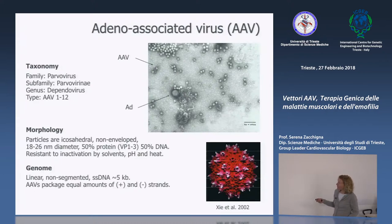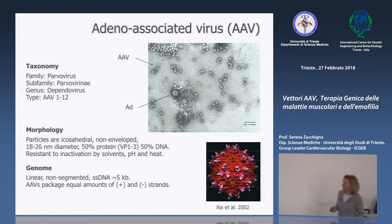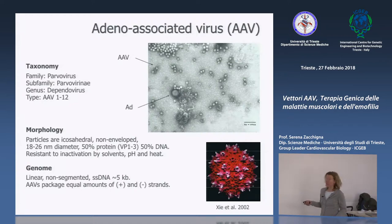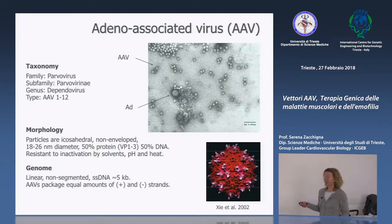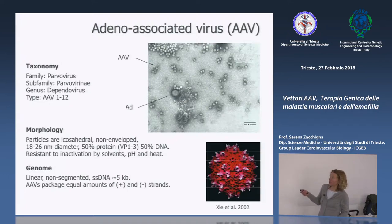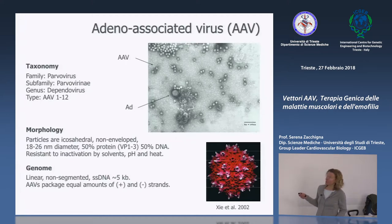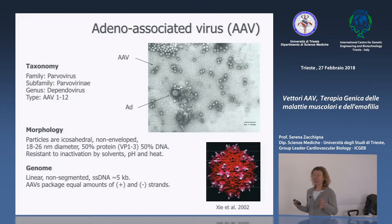Le particelle di AAV hanno un capside rivelato in cristallografia per la prima volta nel 2002: proteine capsidiche senza envelope che contengono il DNA virale, un DNA lineare a singolo filamento molto piccolo. Rispetto alle dimensioni di adenovirus, è un virus molto piccolo. In terapia genica, questo condiziona la capacità di questa classe di vettori di impacchettare informazioni genetiche non troppo grandi.